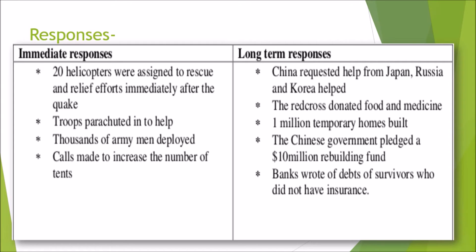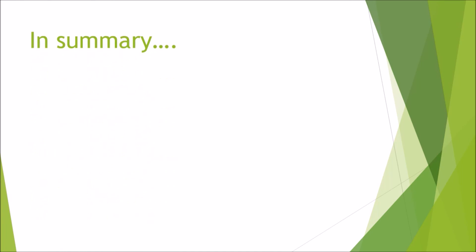The long-term response was that China requested help from Japan, and Russia and Korea also helped. The Red Cross donated food and medicine. 1 million temporary homes were built and the Chinese government pledged a 10 million dollar rebuilding fund. Banks wrote off debts of survivors who did not have insurance.